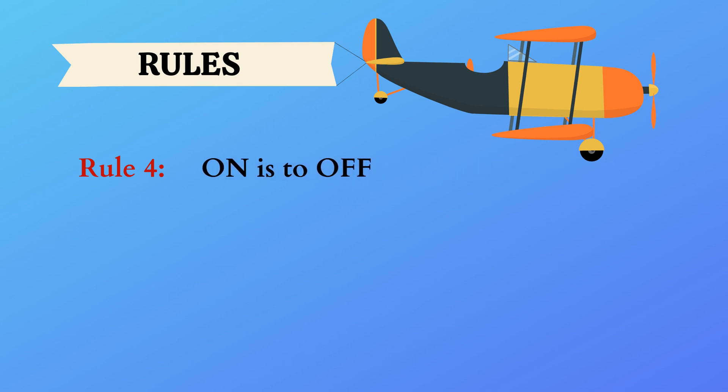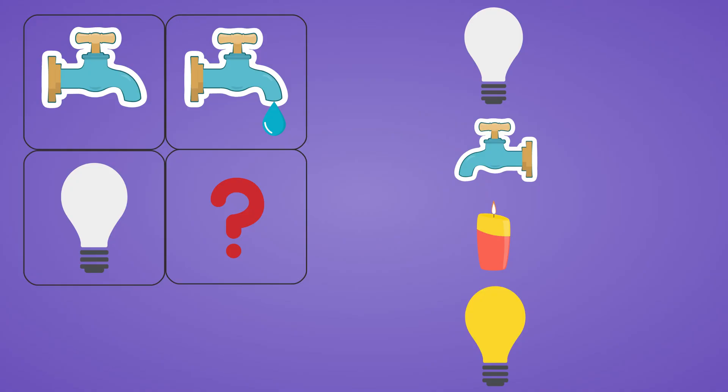Rule 4: on is to off. Let's look at how the top 2 pictures are related to each other. The first picture is a tap that is off. The second picture is a tap that is on. So, it's an on off relationship.